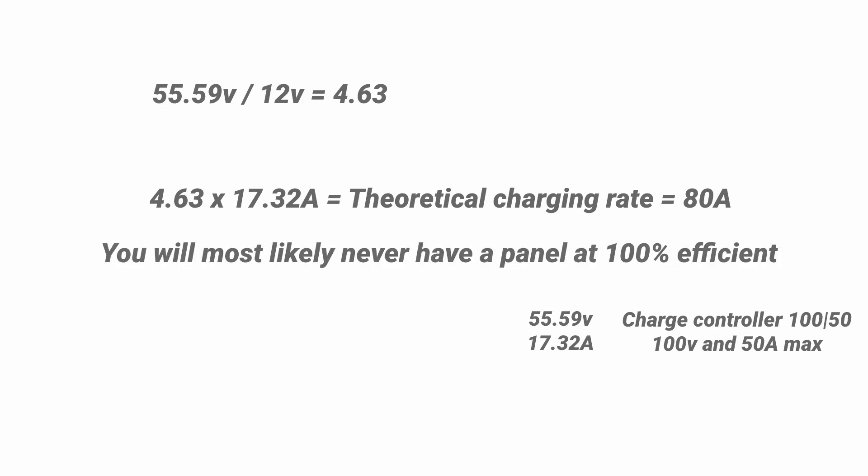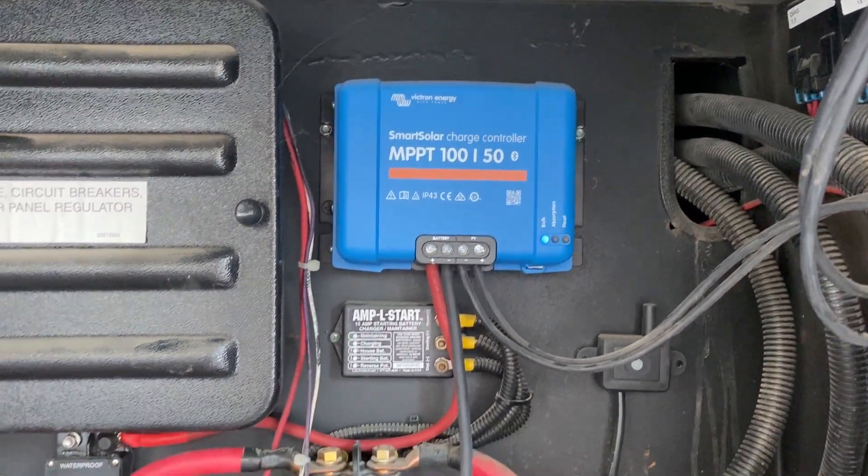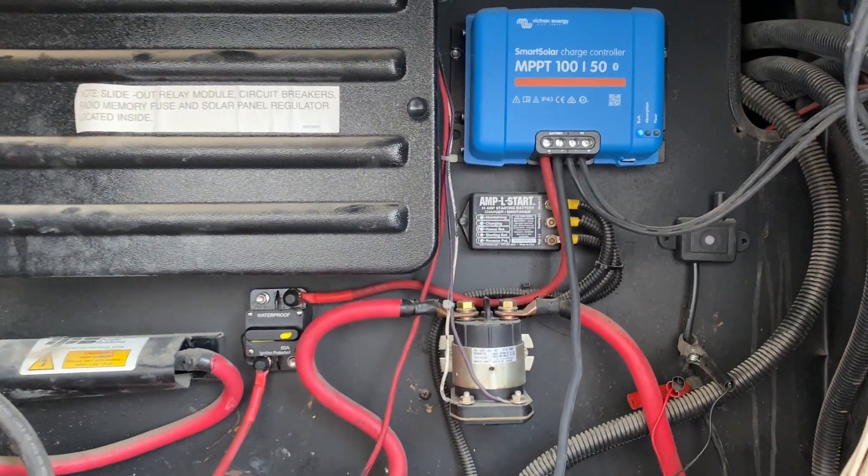Here's some final math to determine if you need to buy another charge controller for your extra panels. If you take the final voltage of the panels and divide it by the voltage of your battery bank, in this case 12, we would get the number 4.63. If you take 4.63 and times it by the current amps of the system, in this case 17.32 amps, we would get a total of 80 amps. What this means is if the panels are producing maximum amount of power it could be charging your battery at 80 amps. But the charge controller that we have can only output 50 amps which means we would be missing out on some energy that could be charging the batteries.